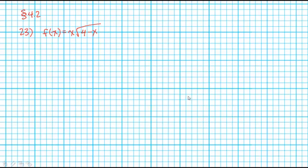Okay, here's a recording of problem number 23 from section 4.2. We're asked to find the local extrema, the intervals of increasing, and the intervals of decreasing for the function given. f(x) is equal to x times the square root of 4 minus x.